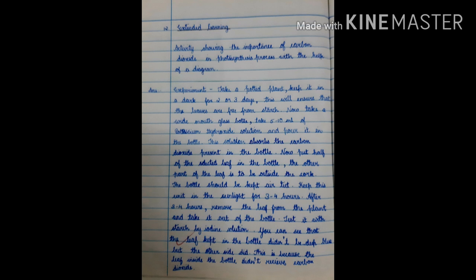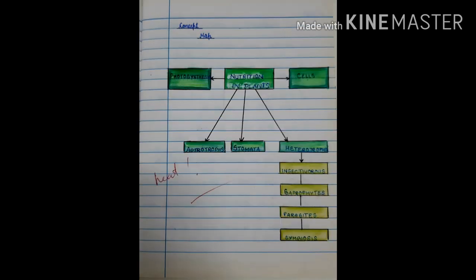Keep this unit in the sunlight for 3-4 hours. After 3-4 hours, remove the leaf from the plant and take it out of the bottle. Test it with starch by iodine solution. You can see that the leaf kept in the bottle did not become bluish black. But the other side did. This is because the leaf inside the bottle did not receive carbon dioxide.